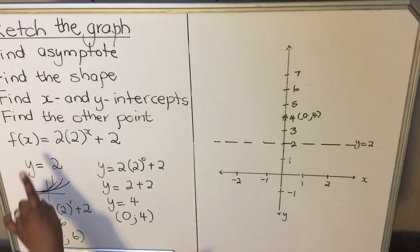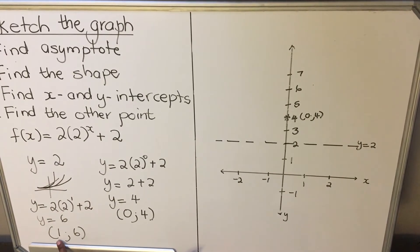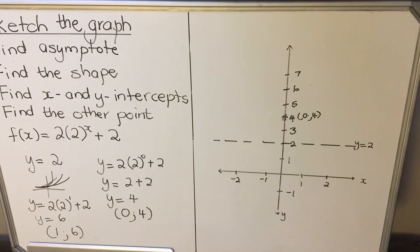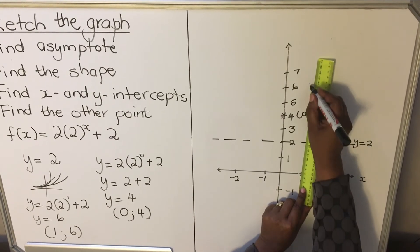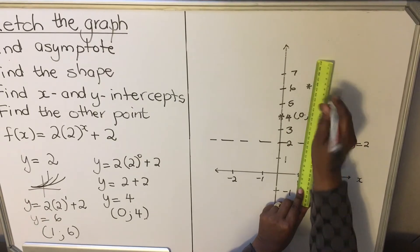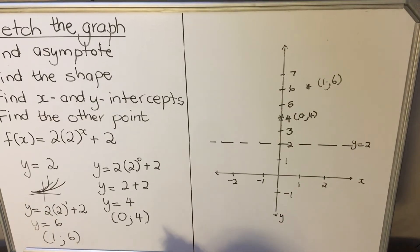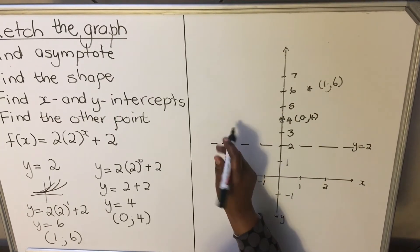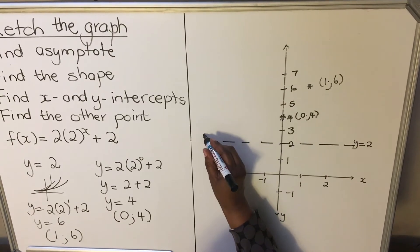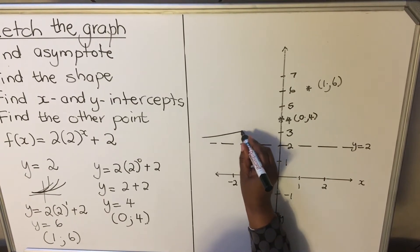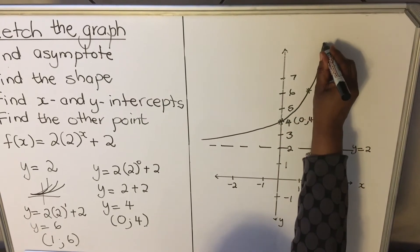Step 4: the other point is (1, 6). My x is 1, my y is 6 — plot that point and write the coordinate (1, 6). Then draw the function: in the second quadrant the graph comes closer to the asymptote, then moves away, cuts the y-axis at (0, 4), goes through the other point (1, 6). This is the graph of f.